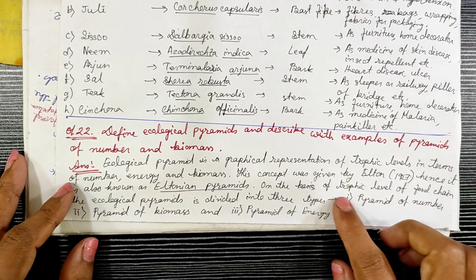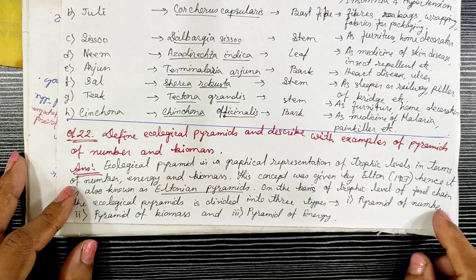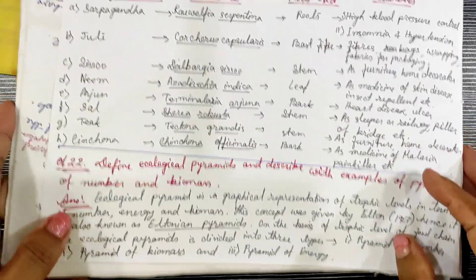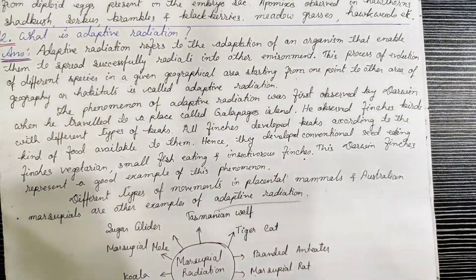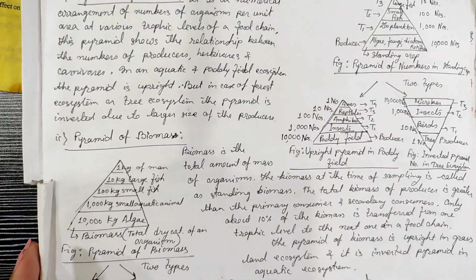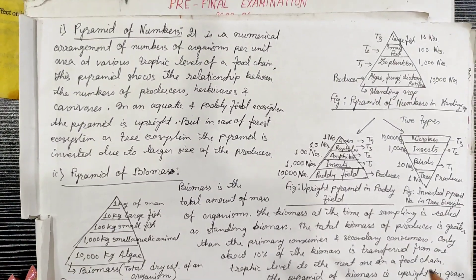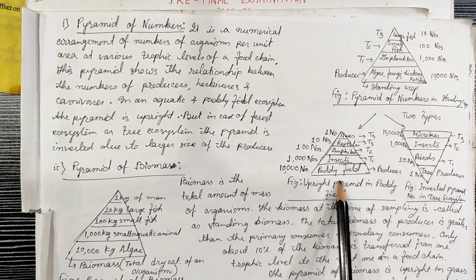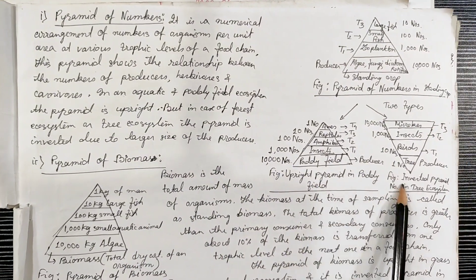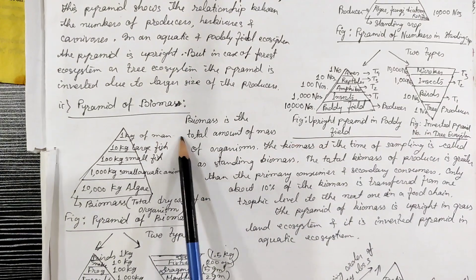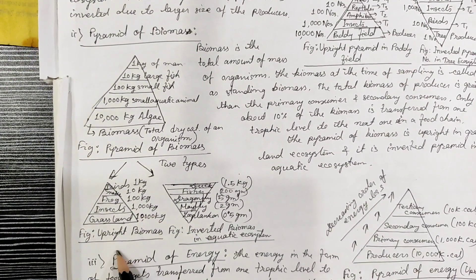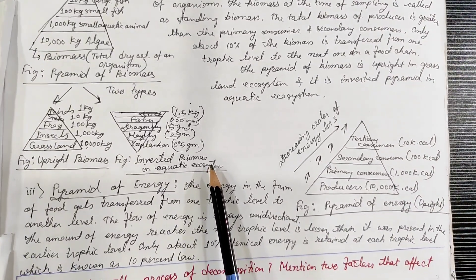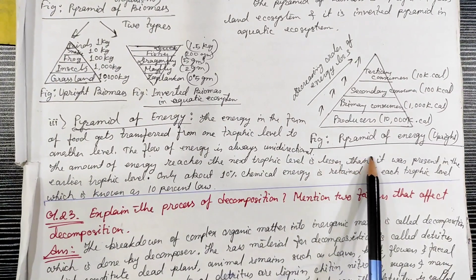Next: describe the different ecological pyramids and give examples of pyramids of numbers and biomass. Pyramids of numbers include upright and inverted types. Biomass pyramids include upright biomass pyramid and inverted biomass pyramid. The pyramid of energy is always upright.